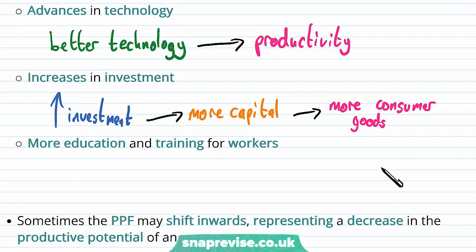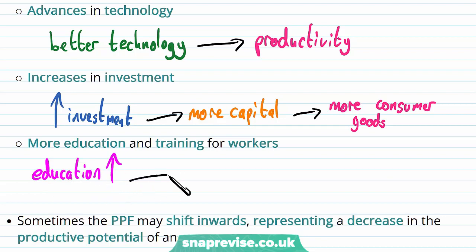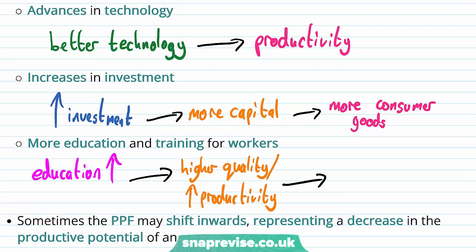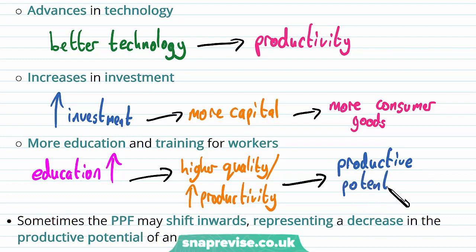Finally, we can think about education and training as a form of shifting out our PPF curve. Education and training will produce higher quality workers who are able to produce goods at a higher quality, and will also increase the productivity of workers. This will lead to a higher productive potential, defined by an outward shift in the PPF curve.